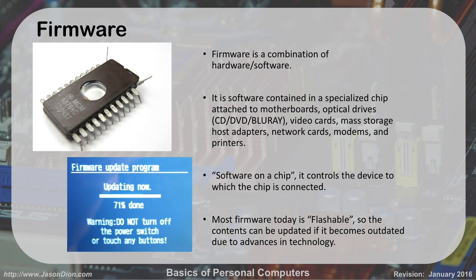And then we have firmware, which is kind of weird — students sometimes have a hard time grasping this. It's really a combination of both hardware and software, often called software on a chip. It is software, but it's on a physical memory chip component. BIOS — Basic Input Output System — is a great example of firmware. It's loaded on a chip on your motherboard, and when you turn on the computer, it goes to that chip first to learn how to take input from a keyboard and put output to a screen.